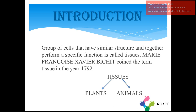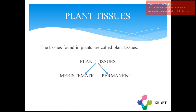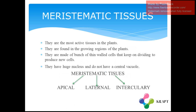Marie François Xavier Bichat coined the term 'tissue' in the year 1792. First let us learn about plant tissues. Tissues are found in plants and are divided into two parts: meristematic tissues and permanent tissues.